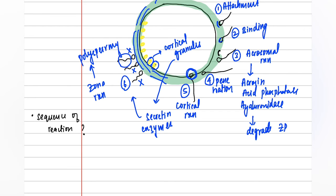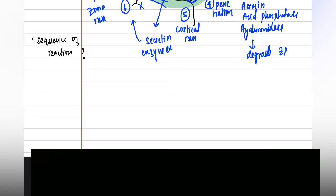Let us look at the sequence of all the reactions. The first reaction is the acrosomal reaction: the acrosome of the sperm releases enzymes such as acrosin, acid phosphatase, and hyaluronidase, which degrade or soften the zona pellucida so that the sperm can penetrate inside. The second reaction is the cortical reaction: the sperm reaches the cortex and the cortical granules are released.